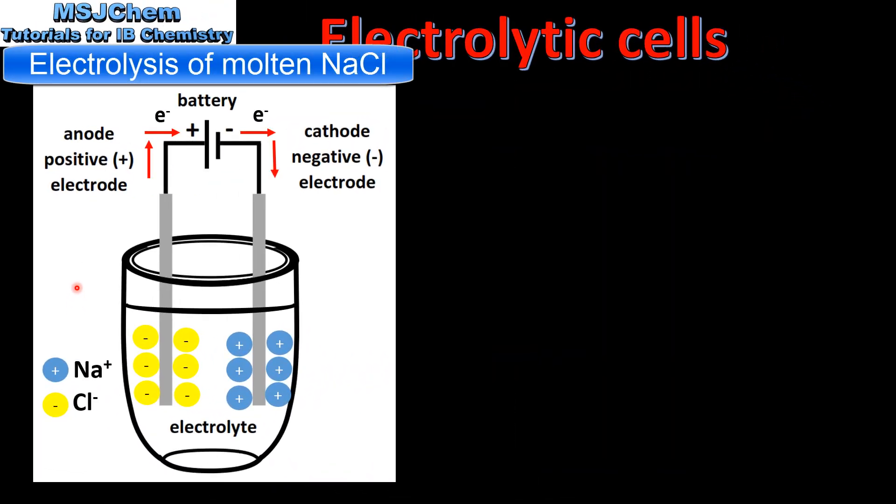Here we have a diagram of an electrolytic cell. The electrolyte is molten sodium chloride which is composed of positive sodium ions and negative chloride ions. When the electric current is supplied, the negative chloride ions are attracted to the anode which is the positive electrode.